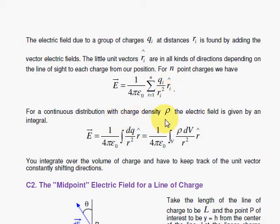For the continuous distribution, where you have a charge density rho, which is then some function of x, y, and z, then you find that you do an integral.